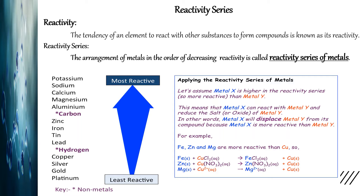Now let's see what the reactivity series is. Here in front of you there is a list showing from top to bottom — the top is the most reactive and the bottom is the least reactive. The arrangement of metals in the order of decreasing reactivity is called the reactivity series of metals. In the reactivity series, the most reactive metal is placed at the top whereas the least reactive metal is placed at the bottom.